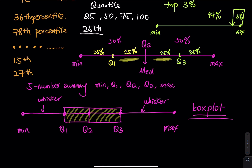This is how we use the five-number summary to construct a box plot. This was just a brief introduction — in the next video I will show you more about how to construct a box plot and the representation of data. If you found the video helpful, please subscribe, like, and share. See you in the next lesson!